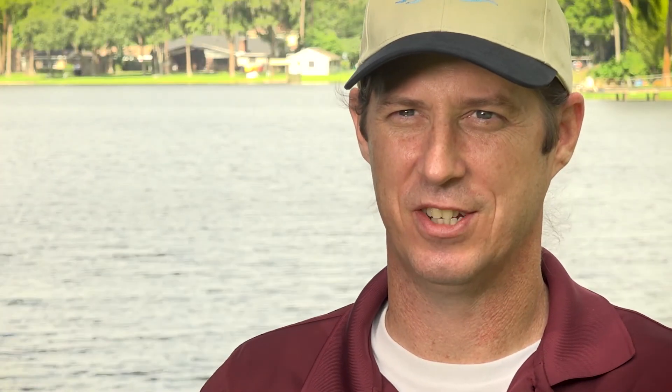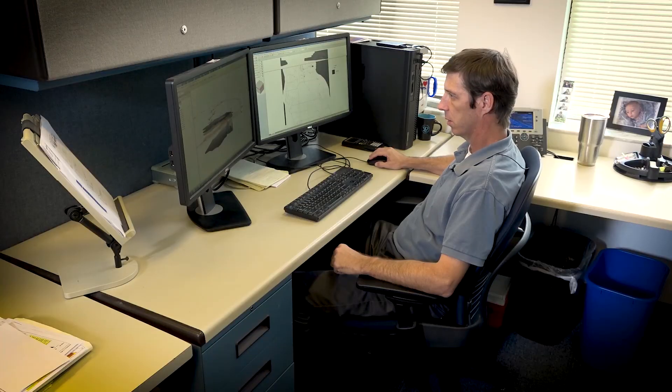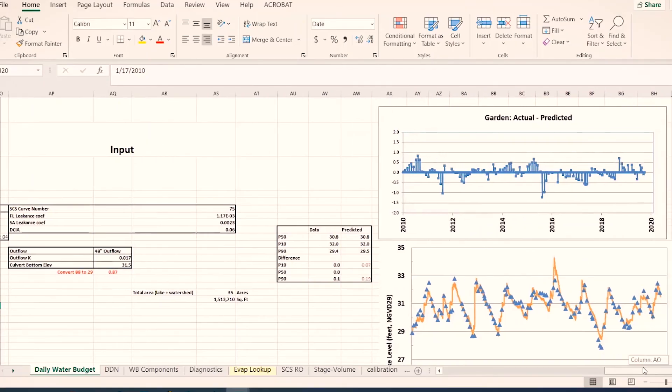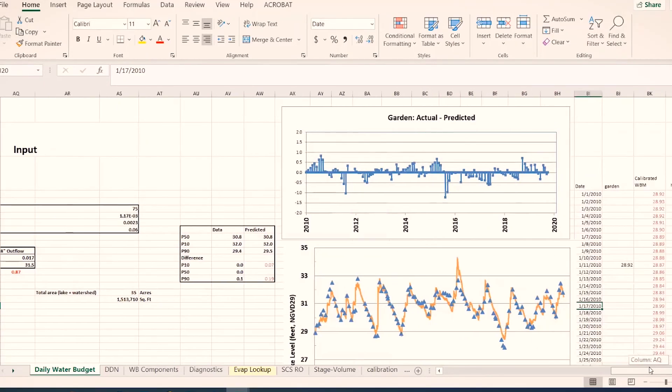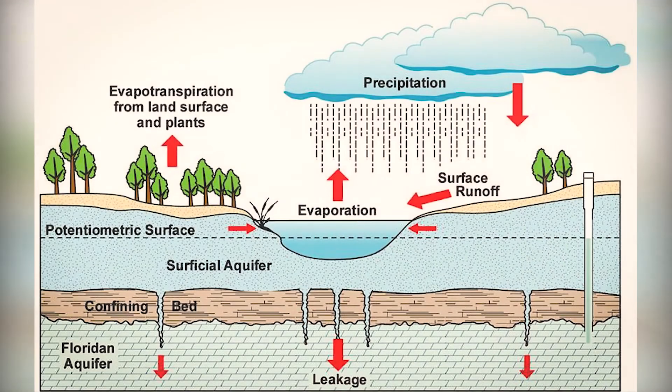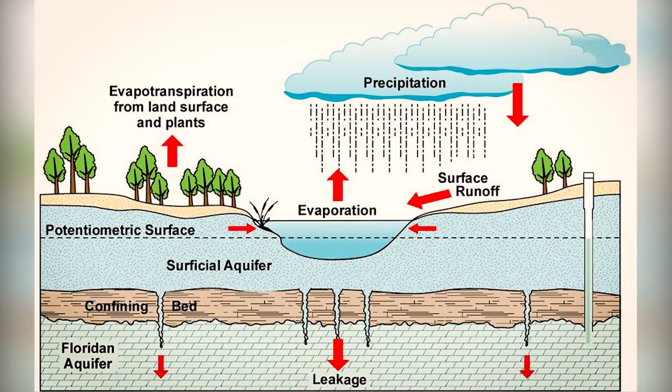I'm Jason Patterson, I'm a professional geologist. My role in creating the minimum level is to create a water budget model. We get data from the staff gauges at the lakes, we get data from wells, we get data from rainfall, and we essentially build a water budget model with that data. A water budget model is essentially all the components going in and out of a lake.